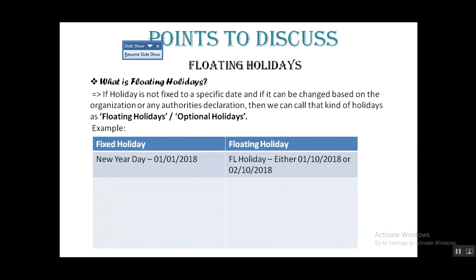What is an example of that? If we check about fixed holidays — for example, New Year's Day is the 1st of January and that date is fixed every year, that cannot be changed. But suppose I have another kind of holiday in my organization whose date is not fixed yet. It can be based on an organization's declaration — for example, it could be the 1st of October 2018, or it could be the next day, the 2nd of October 2018.